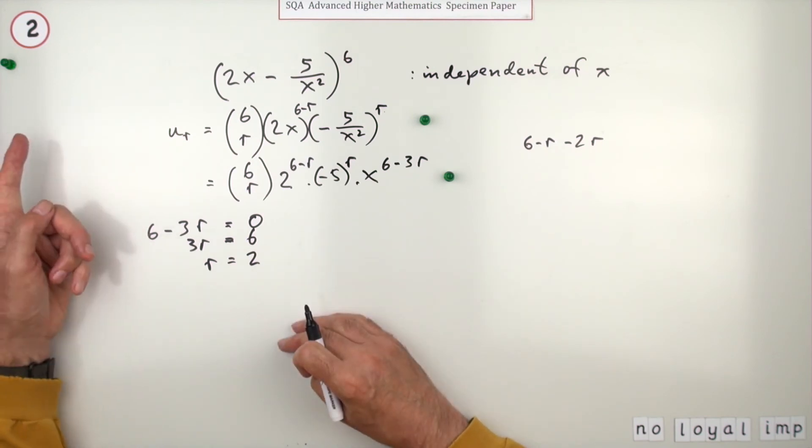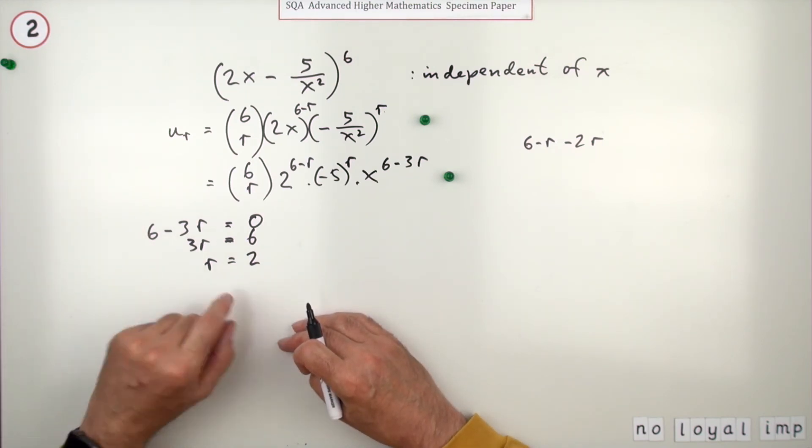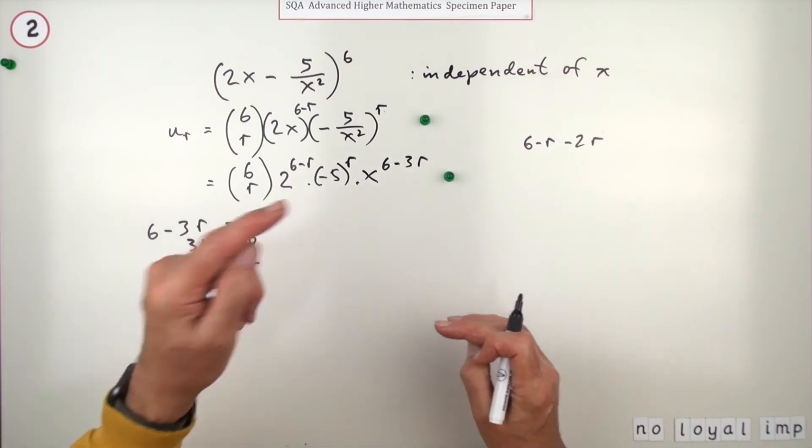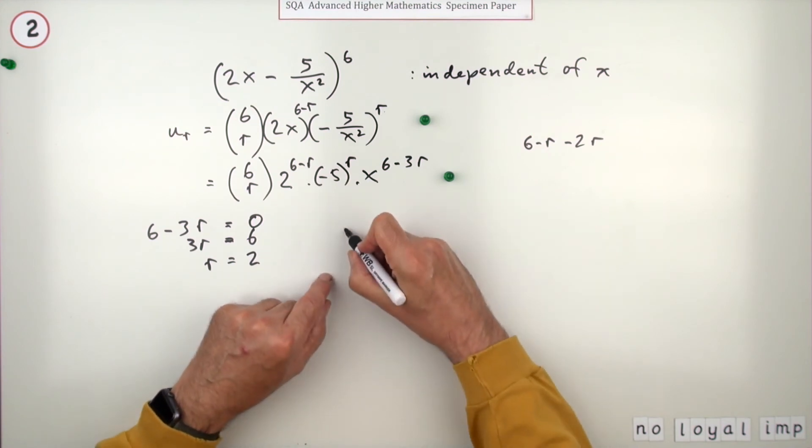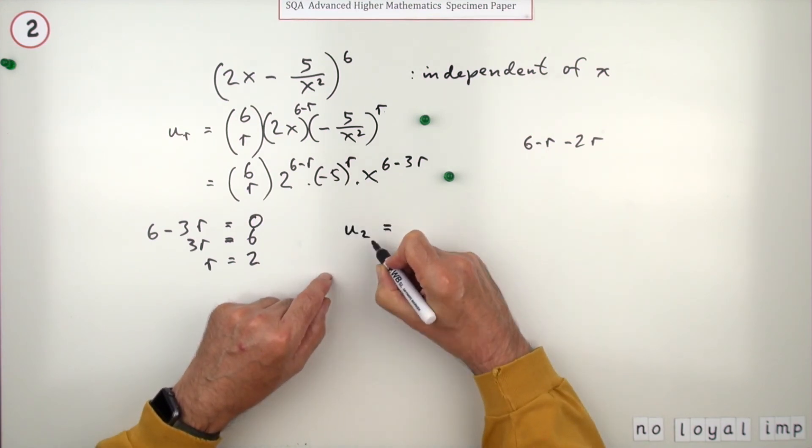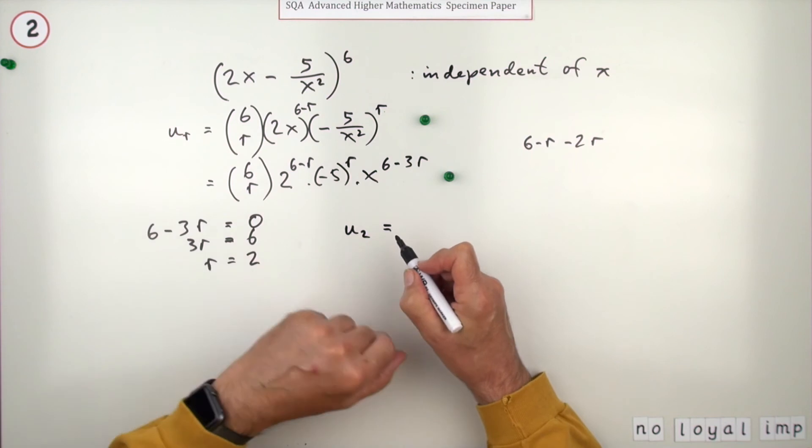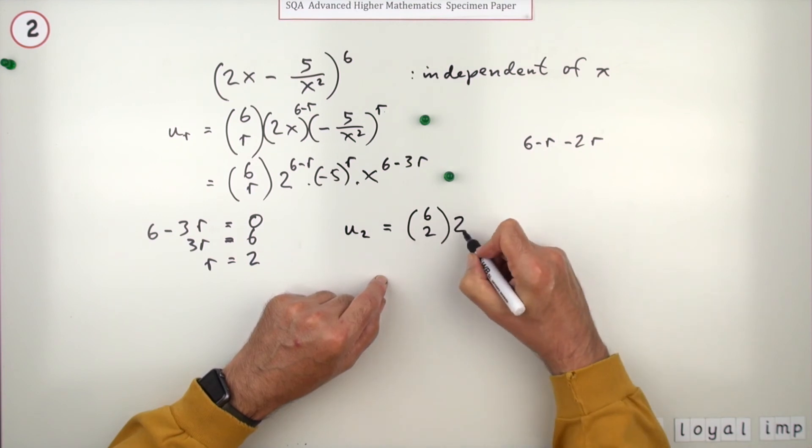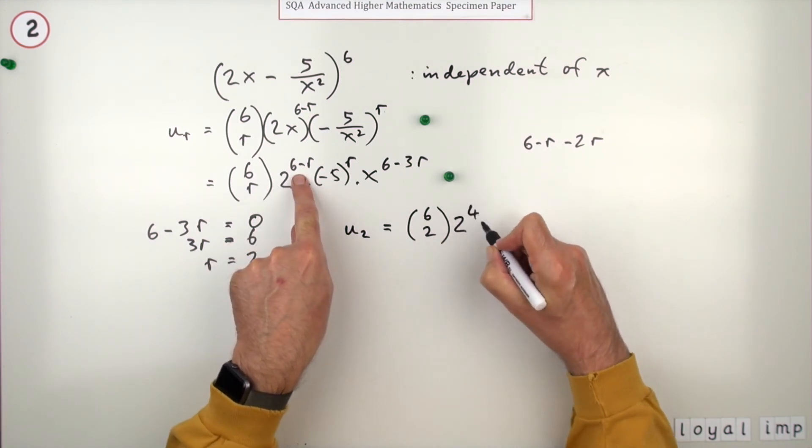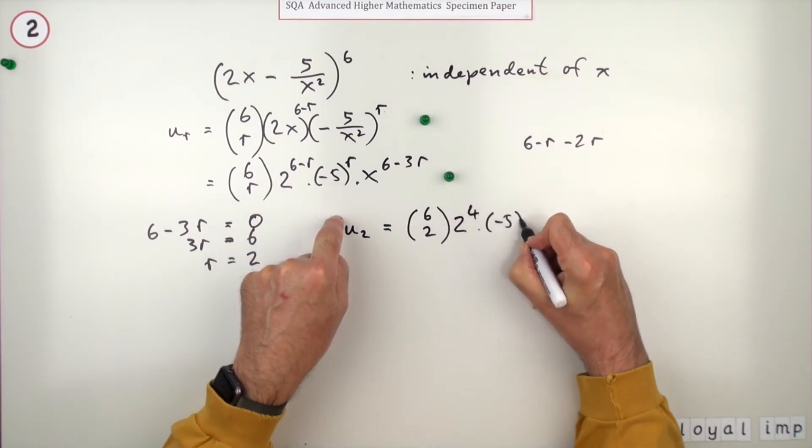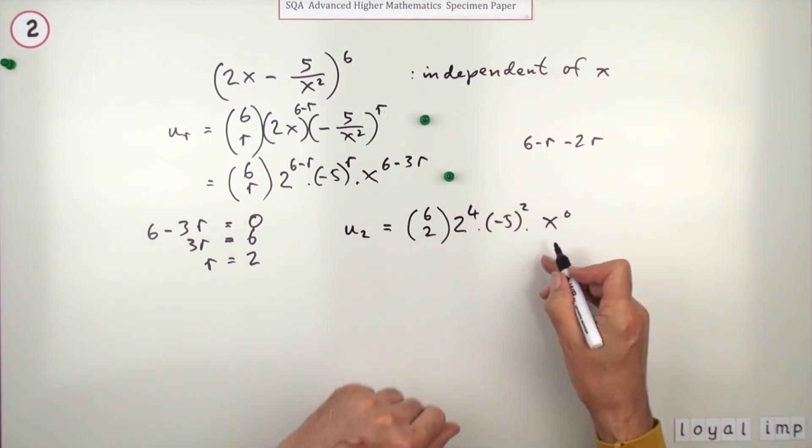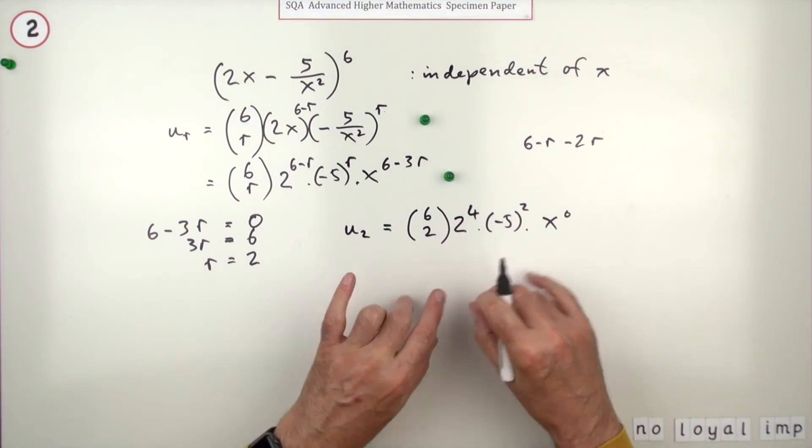No marks for that, because there's only one mark left. It says one mark for identifying the correct value of r and putting it in and getting the answer. So the term you're looking for, u_2—remember that's not the second term because it starts at r equals zero, so it's the third term. u_2 is going to be 6C2 times 2 to the power four, negative five to the power two, and of course x to the zero. I'll put it in anyway. Now you could just put that into your calculator.